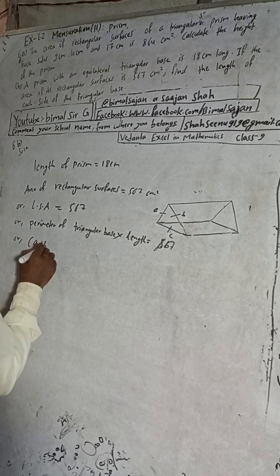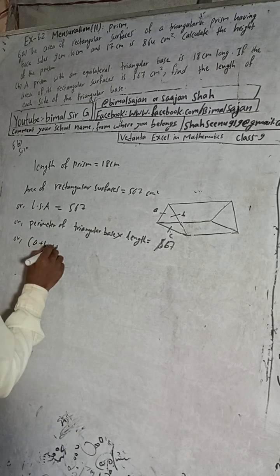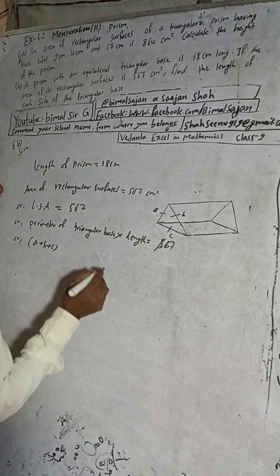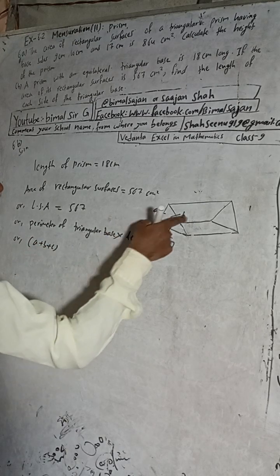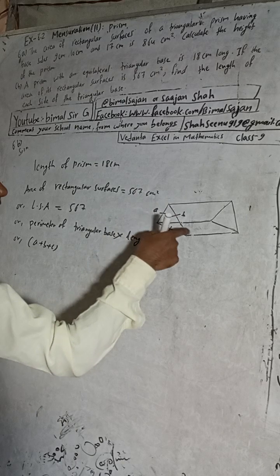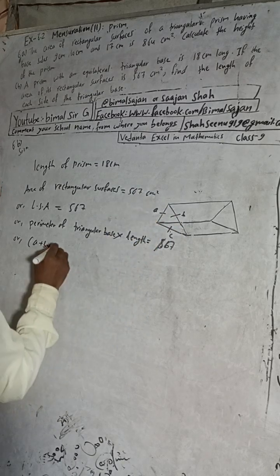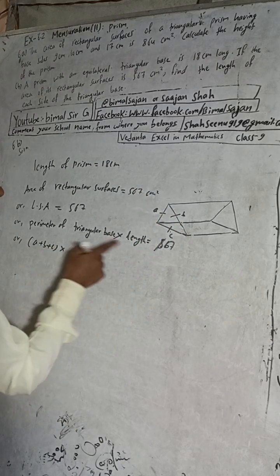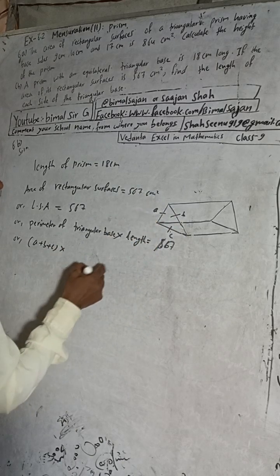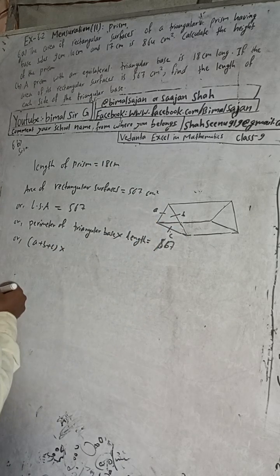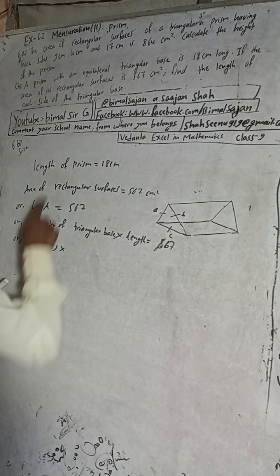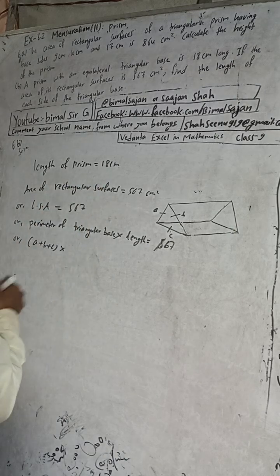The perimeter of the triangular base is A plus B plus C — this side plus this side plus this side — multiplied by length. Length is given here: length is equal to 18. So: 567 = (A + B + C) × 18.